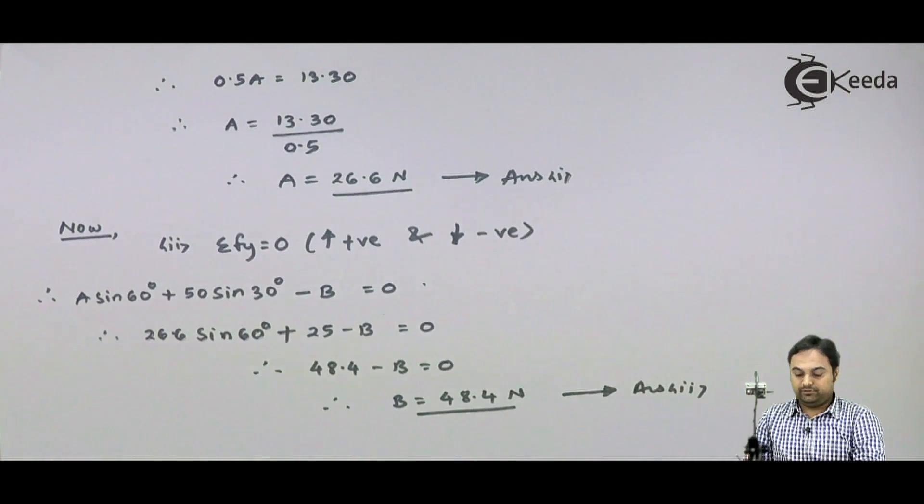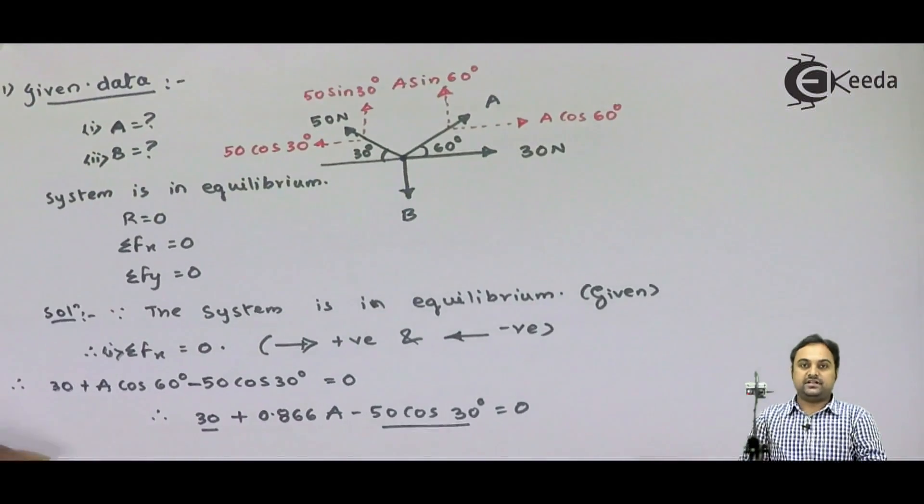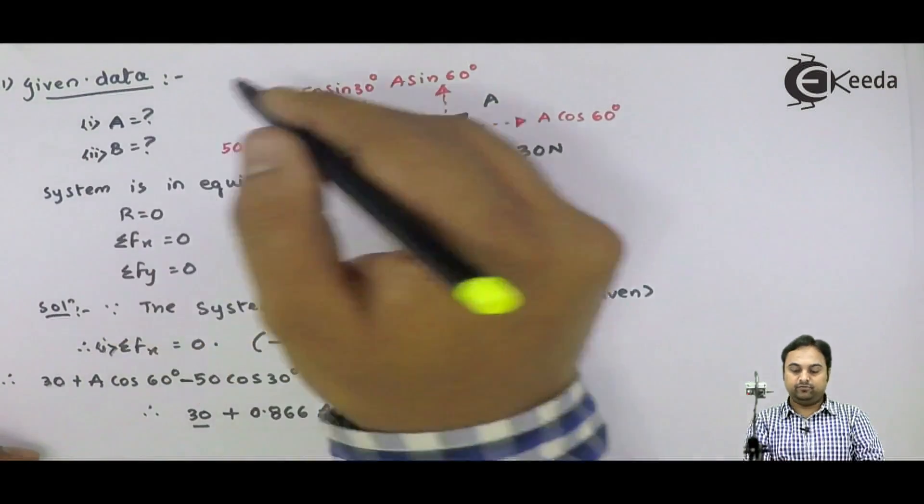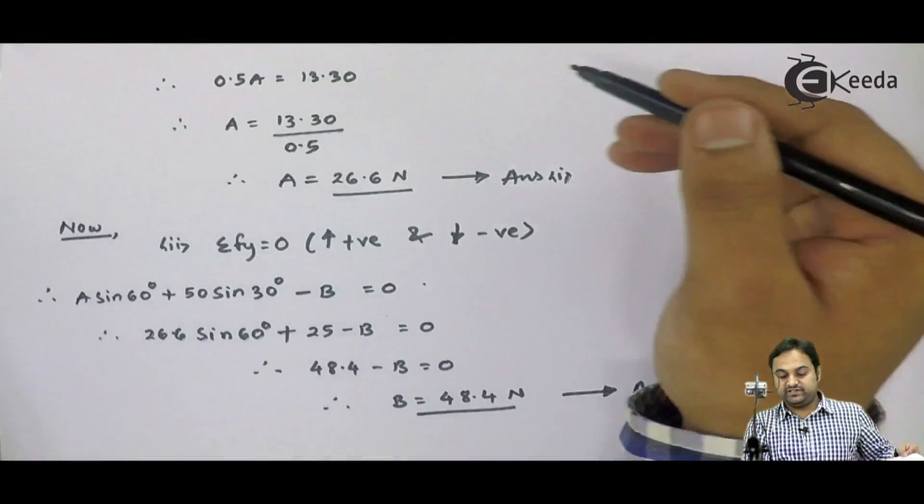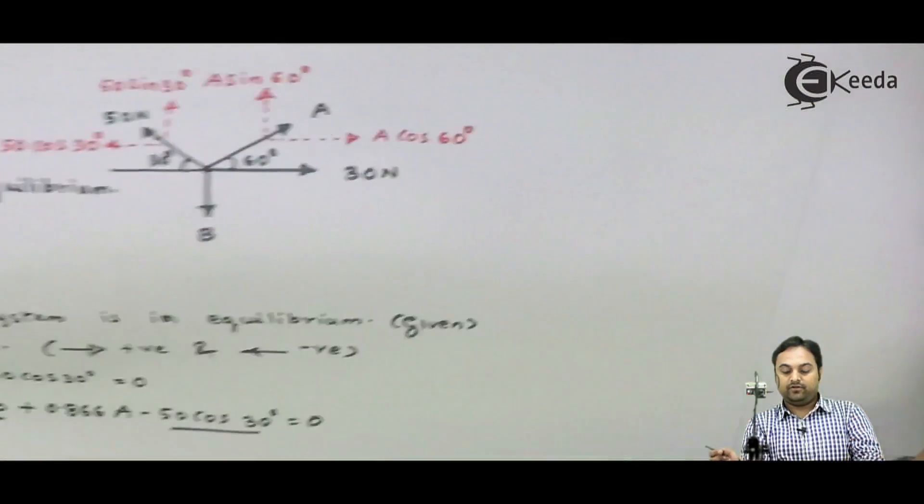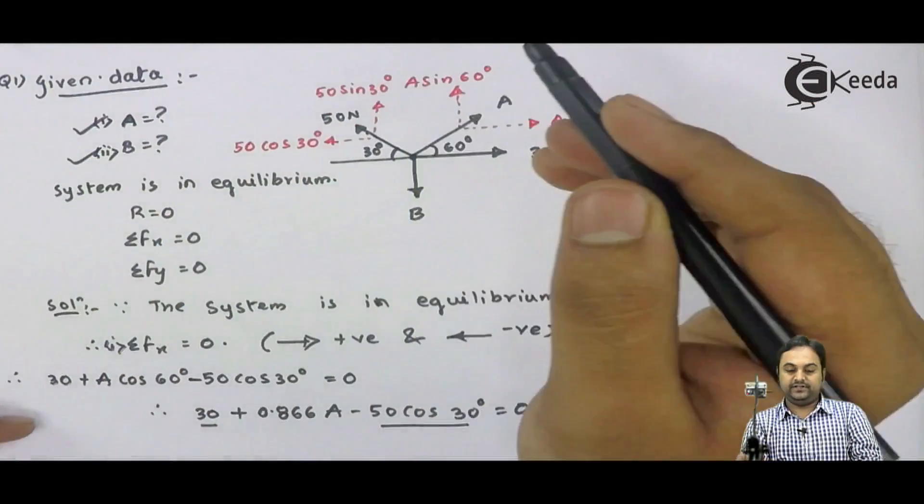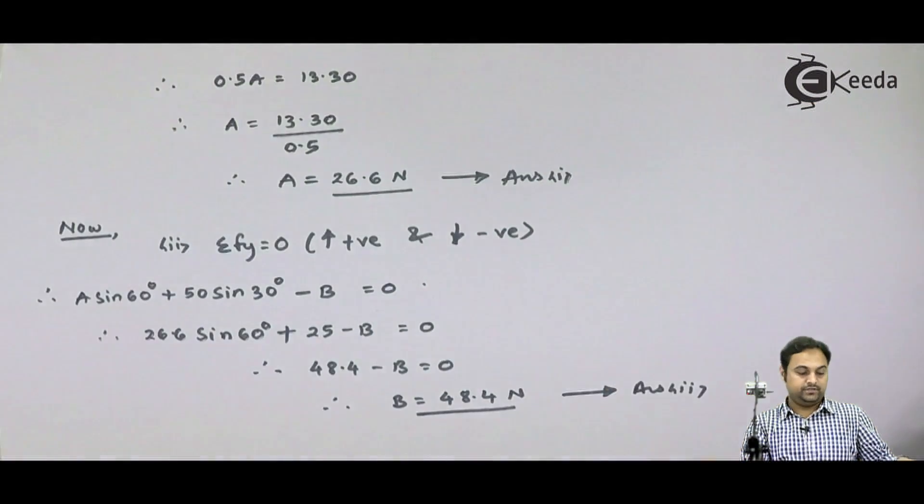So if we look into this question, there were two things asked: value of force A and force B. Force A, we have found out, it is 26.6 Newton. Force B, we have calculated, it is 48.4 Newton. And with this...